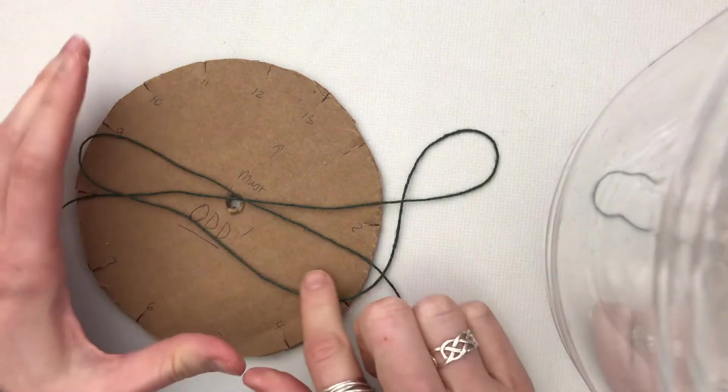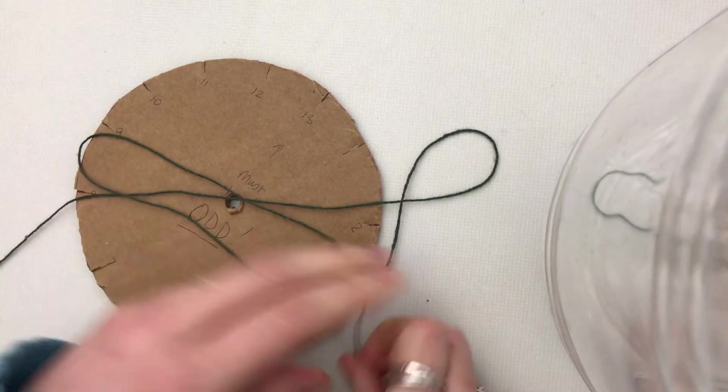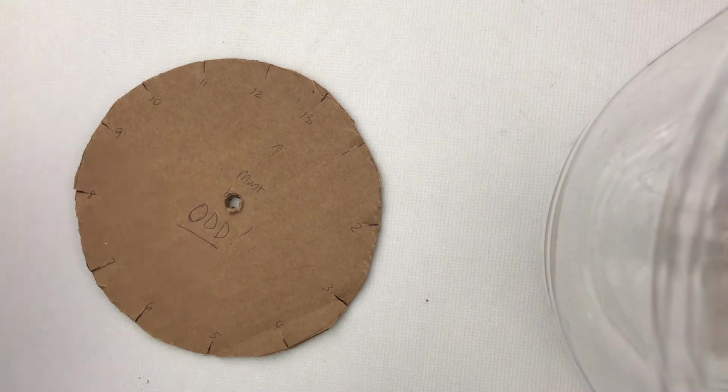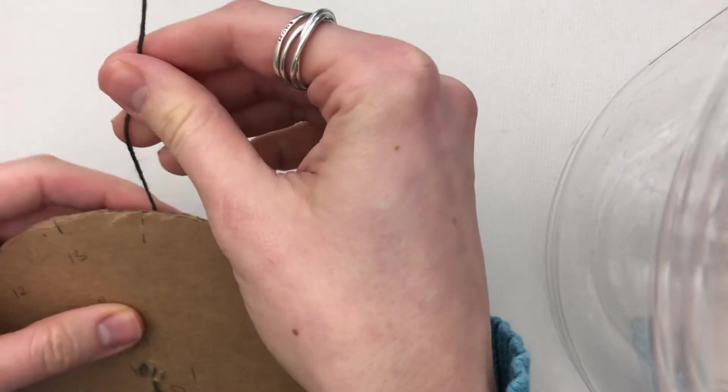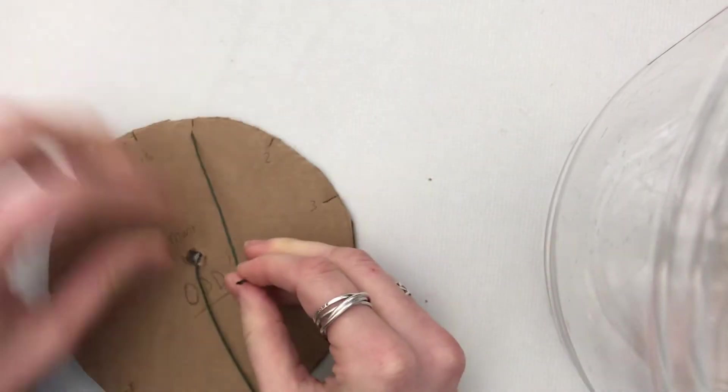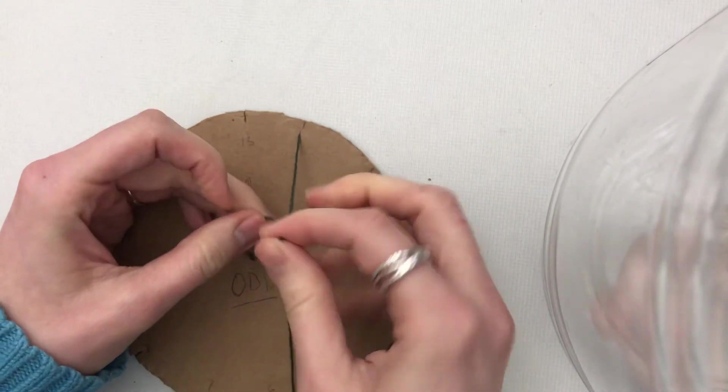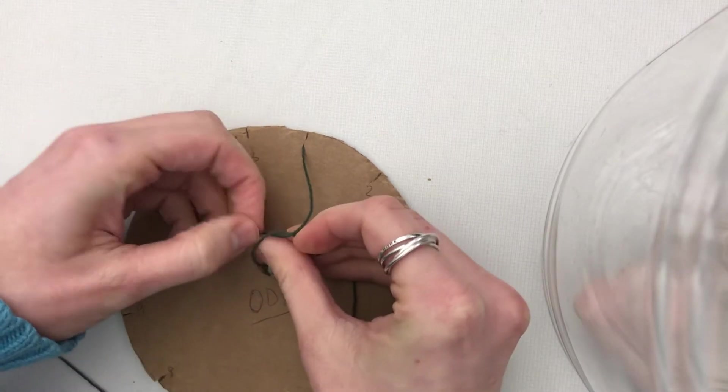Now that you have all of your notches cut out and your string ready to go, you're going to put your string through the middle hole. You're going to bring it around one notch, then you are going to tie your pieces fully together.